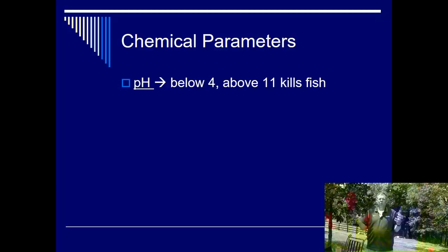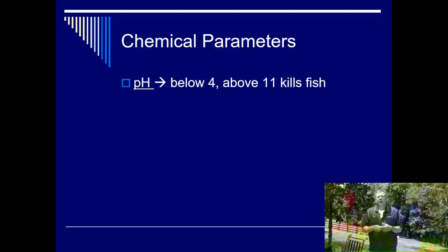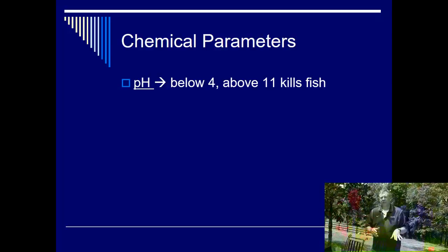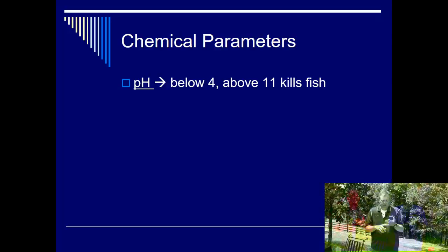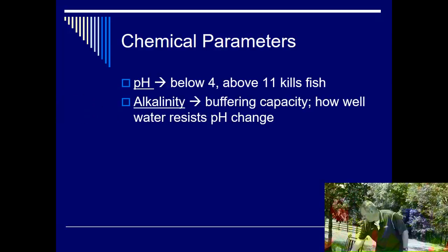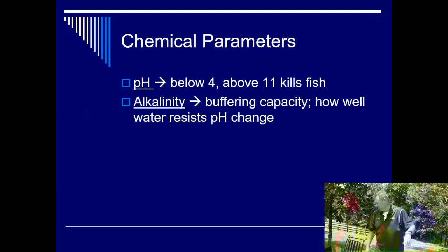pH is always important — pH affects a lot of chemical reactions. In general, below 4 and above 11 is going to kill a fish. As you approach these levels, it's going to stress the fish out. pH is most important, though, in relationship to other chemical reactions. We'll talk about some of those in the next one.